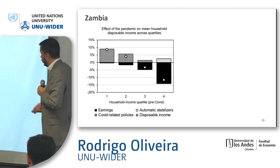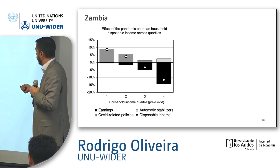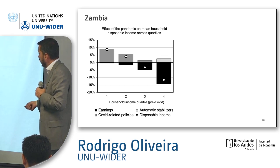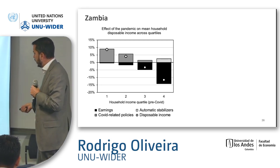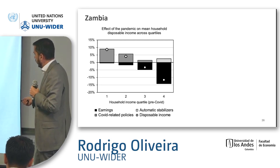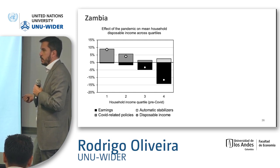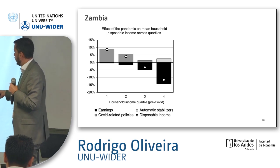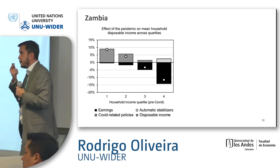We decompose the effect of the pandemic on mean household disposable income across quartiles and split it into: variation in earnings, variation in COVID-related policies, variation in automatic stabilizers, and disposable income. You can see that only the top earners have their income mitigated by automatic stabilizers. There is some observable effect of COVID-related policies, but automatic stabilizers are not visible for lower quartiles.